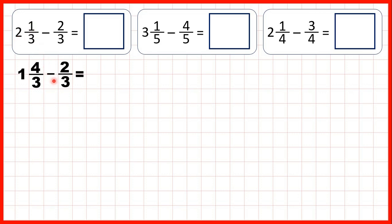So now we can take two-thirds away. We still have our one whole, but four-thirds minus two-thirds is two-thirds, because the denominator stays the same. So that gives us our answer.